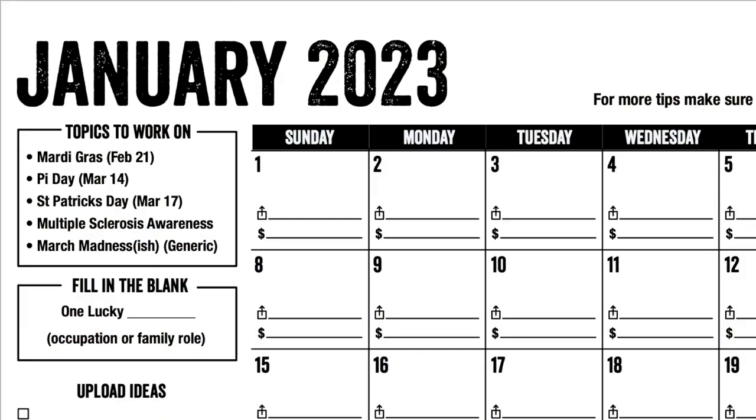They have a lot of topics on there but they're in beta and they'll keep adding stuff. When I went on there they didn't really have topics for St. Patrick's Day. In my January calendar video I had a design idea — 'one lucky blank.' So we're going to use that to create a design for St. Patrick's Day using a template on Kittle, not starting from scratch.